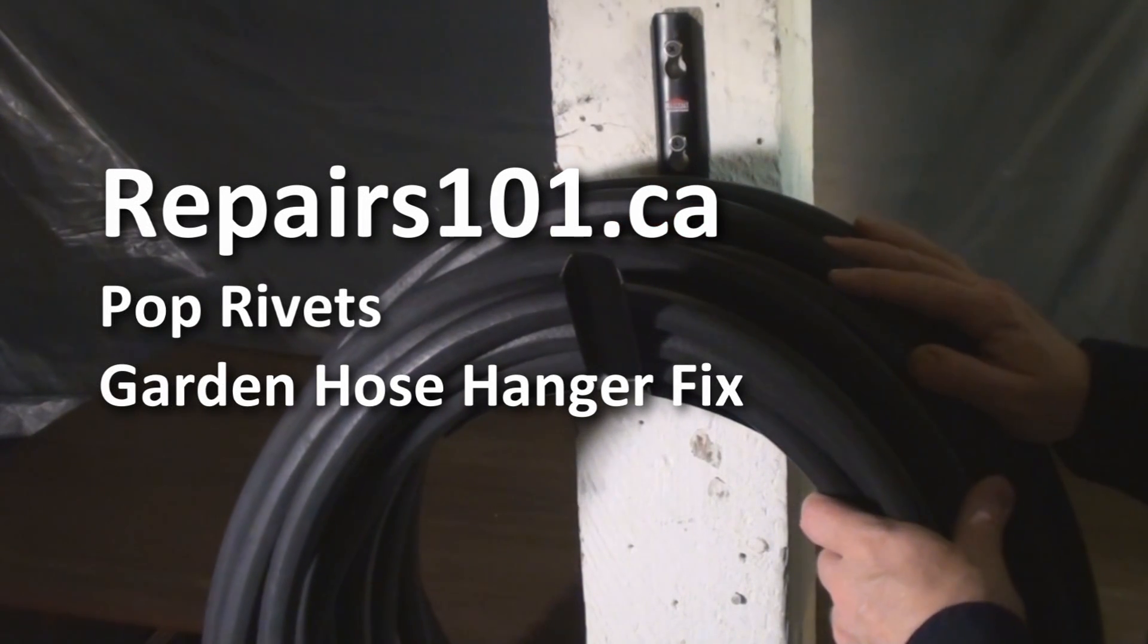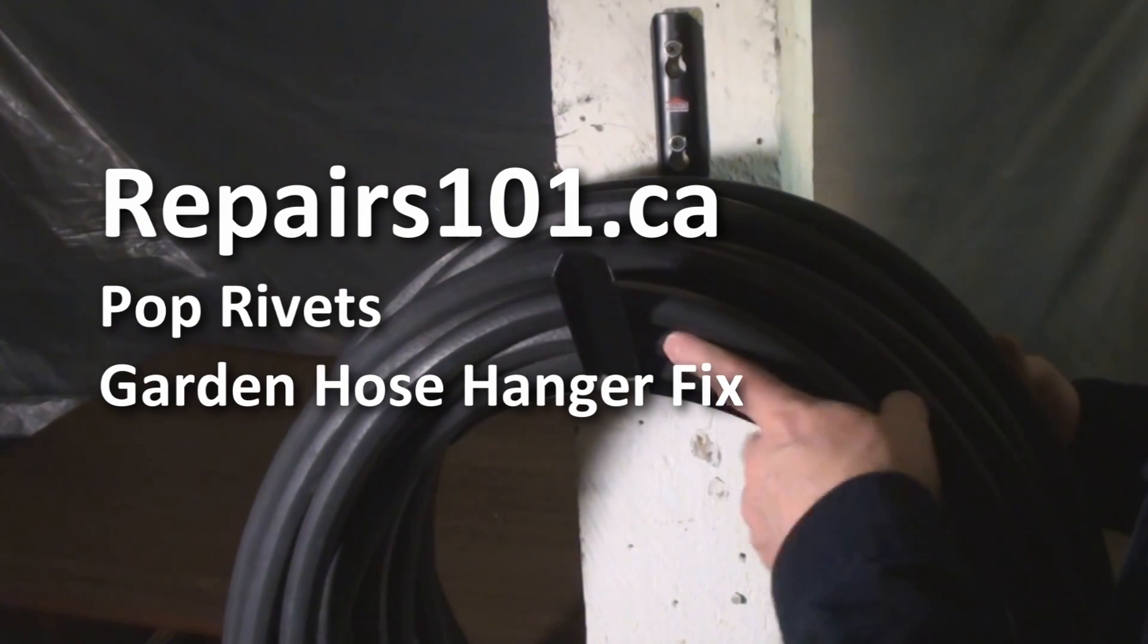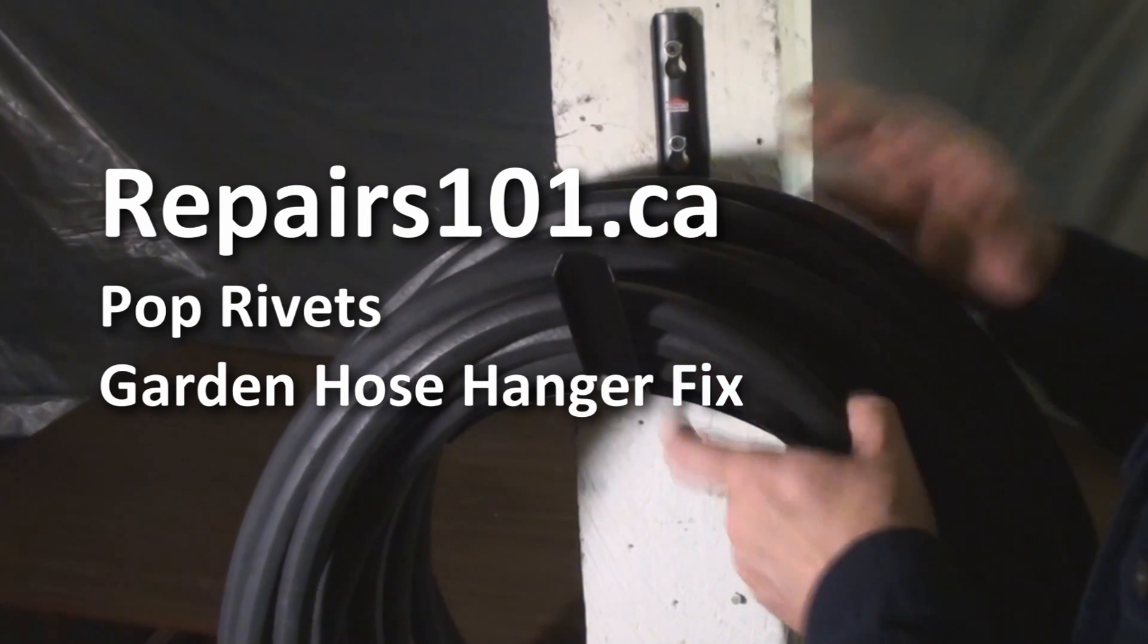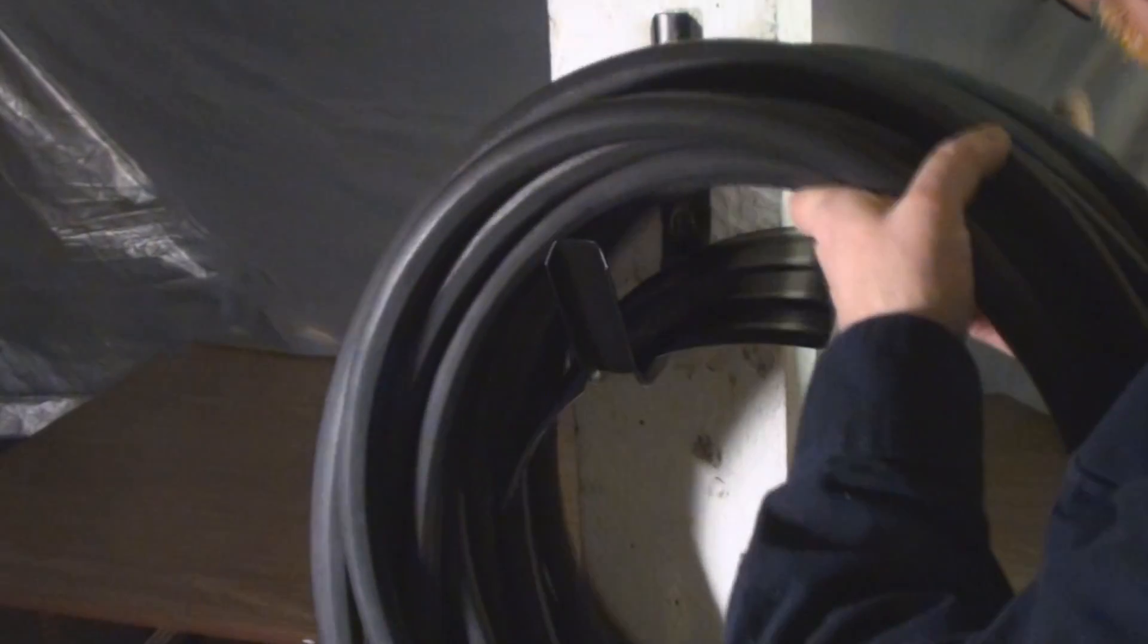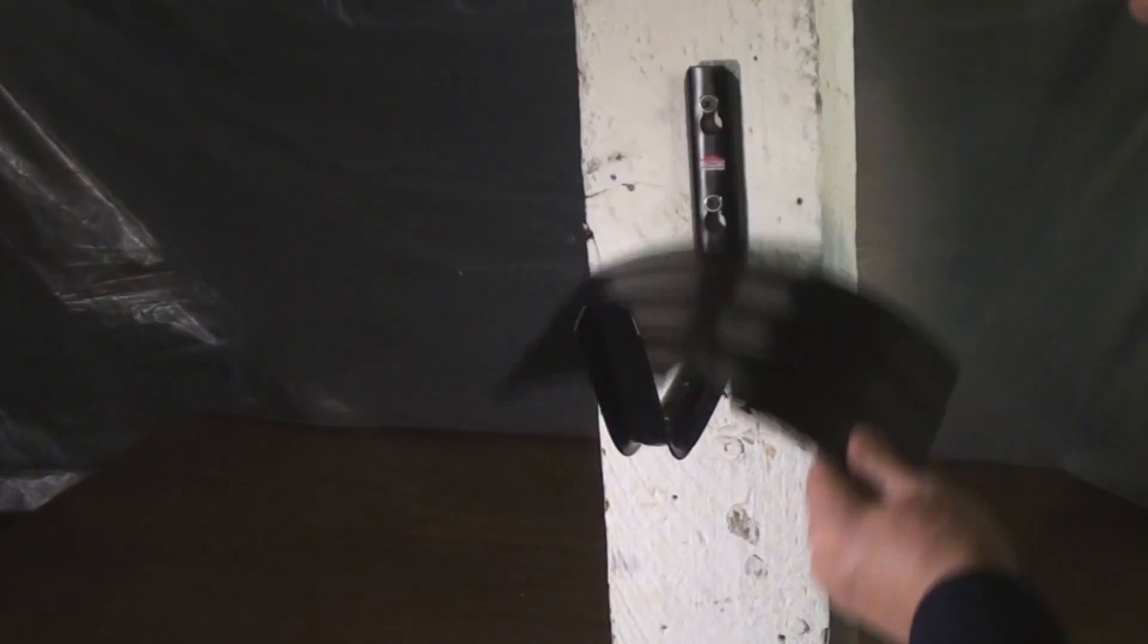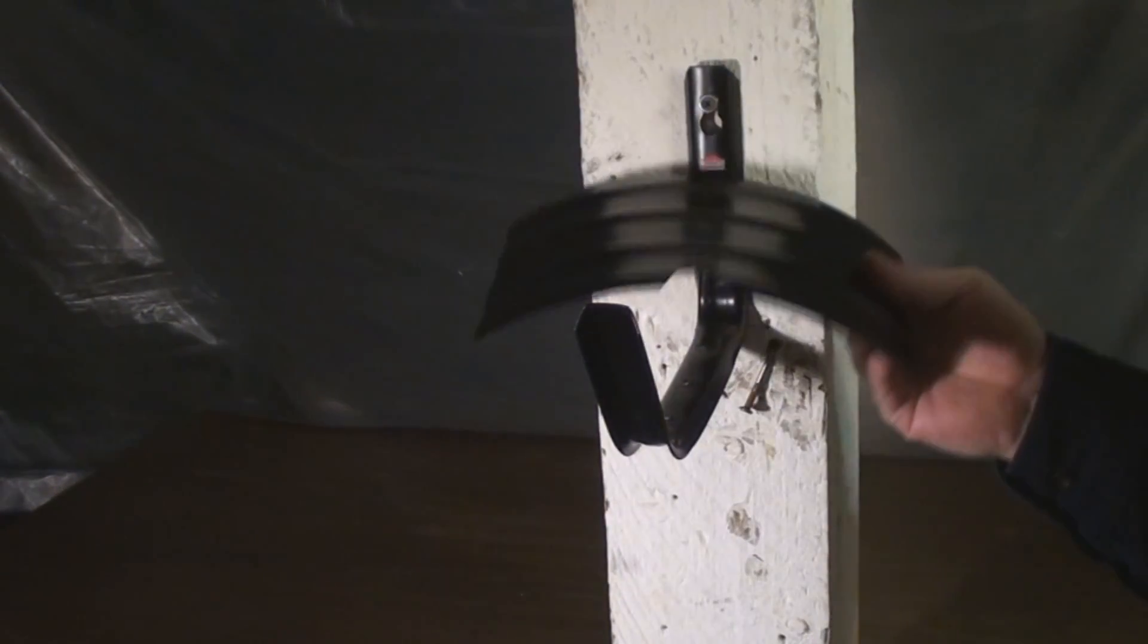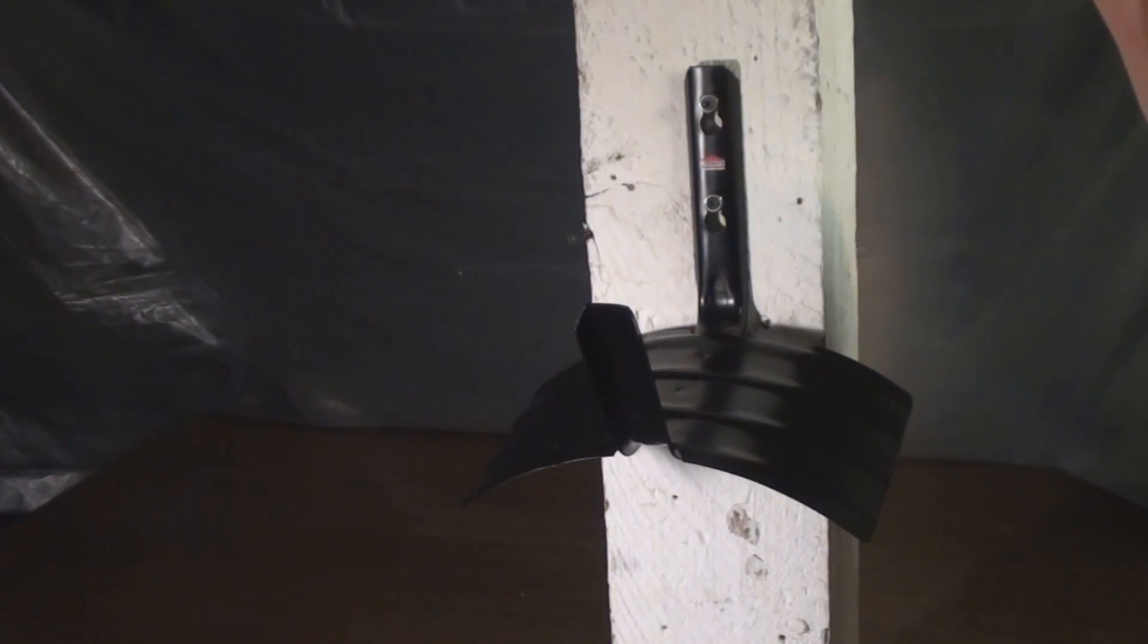Alright, now here's something that I know is a common problem because I used to work as a tree surgeon and we were often going to people's yards and using their hoses to clean up and you'd find that the hose hanger broken like this. So I'm going to show you how to fix that using a pop rivet gun. And it's really easy and fun because it's easy.